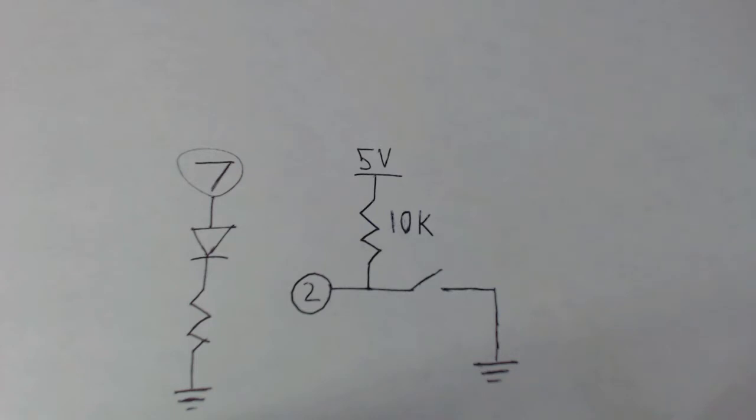If we think about our servo motors, our LEDs and our buzzers from our previous class, those are all components that expect a signal from the robot. The robot is sending some sort of electrical signal to get them to work in the way that they are. The button instead is going to send a signal back to the robot to let the robot know what's going on.